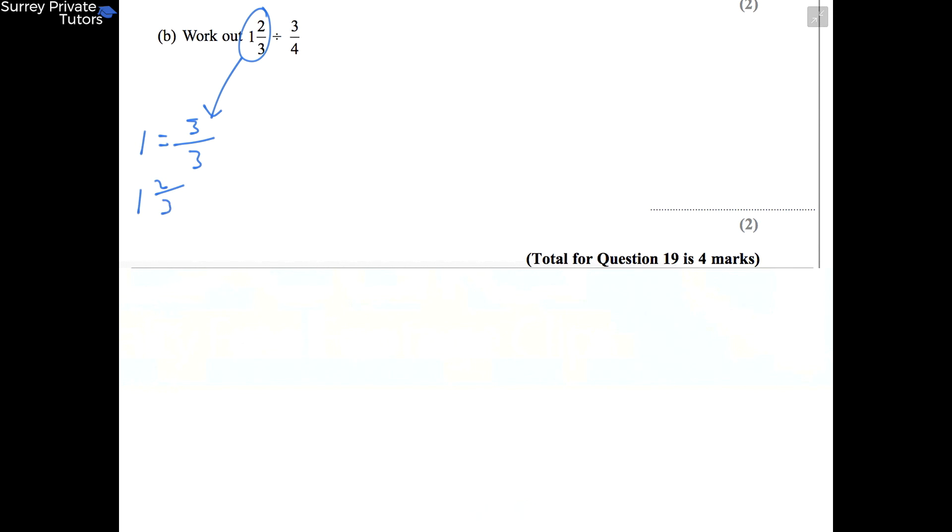Now we can move on to the division itself, so we're actually going to have 5/3 divided by 3/4. And we rewrite this as we've done before—that's 5/3 times by 4/3, so flipping the second fraction. Now the top's going to be 5 times 4, which is 20, and the bottom's 3 times 3, that's 20 over 9.